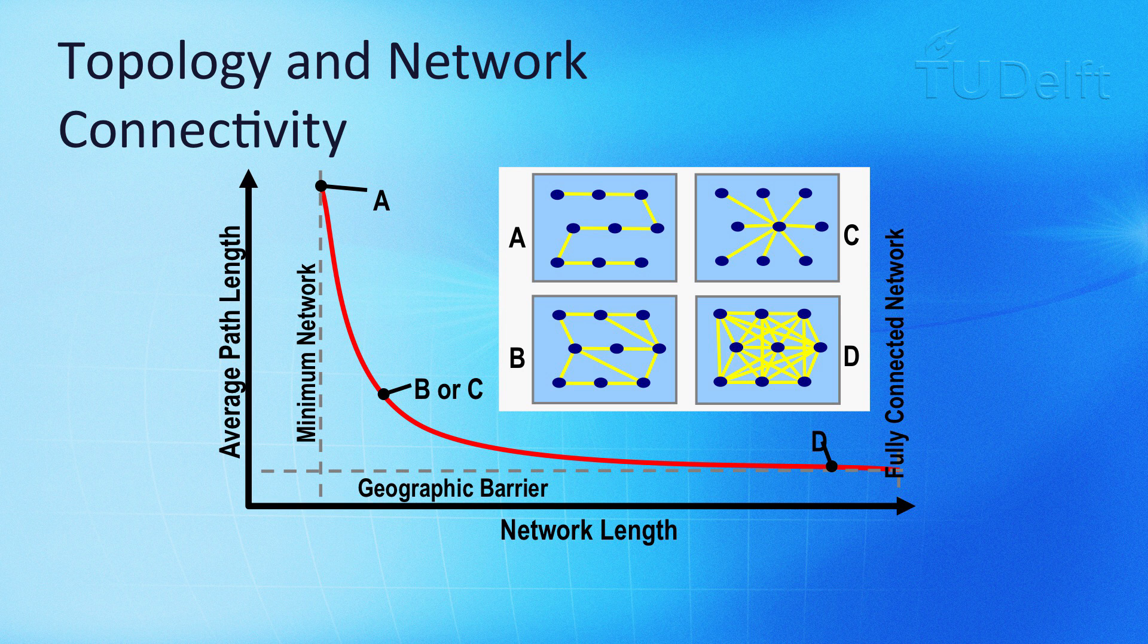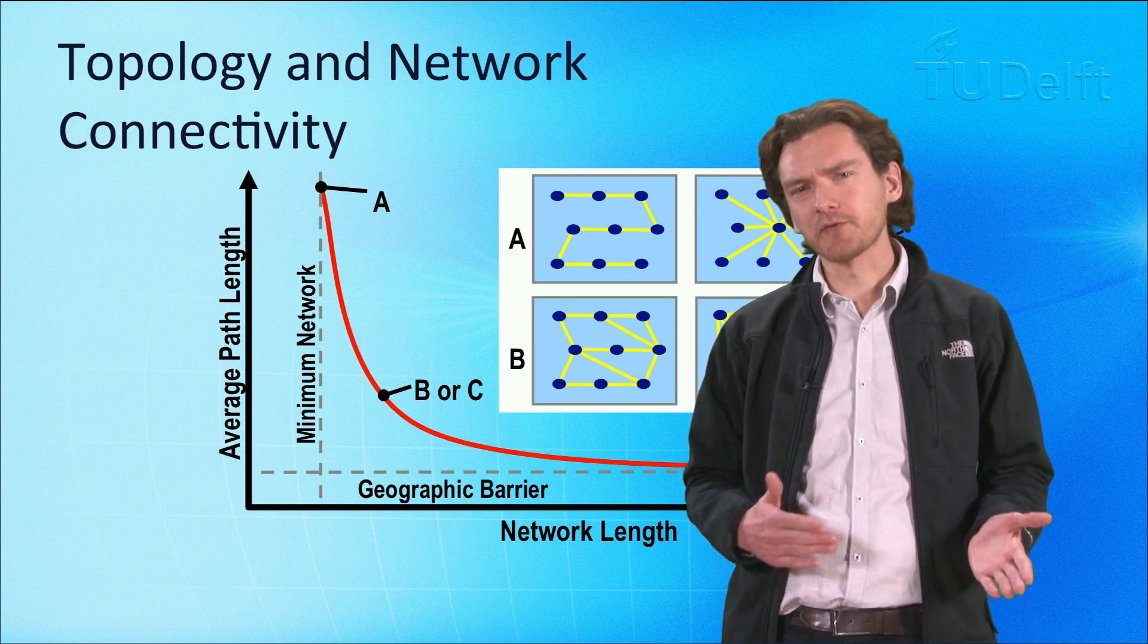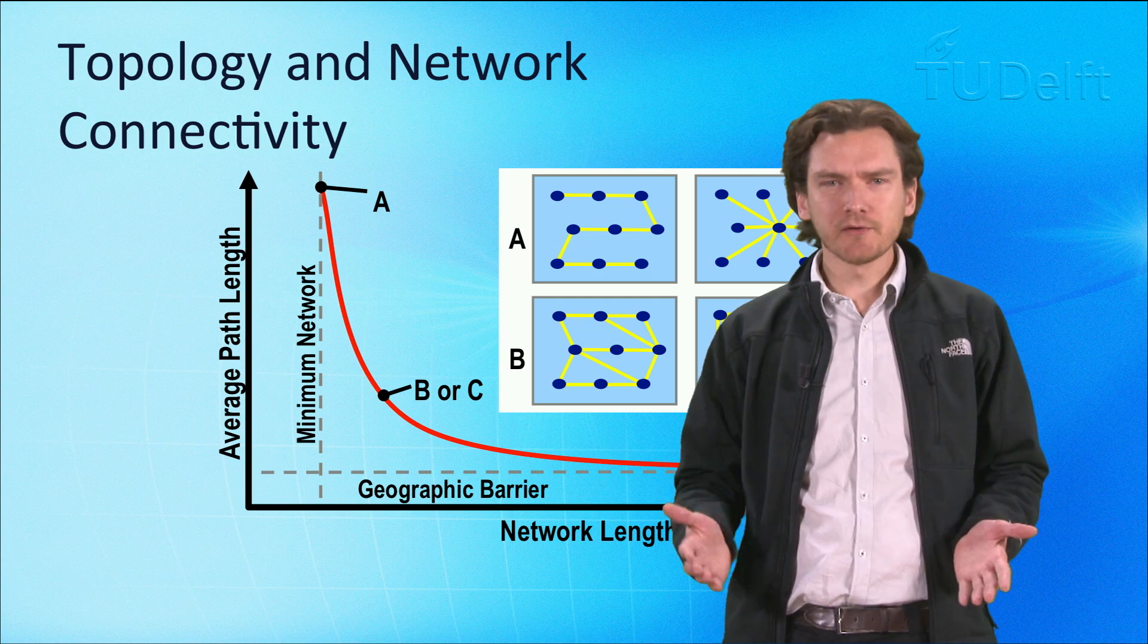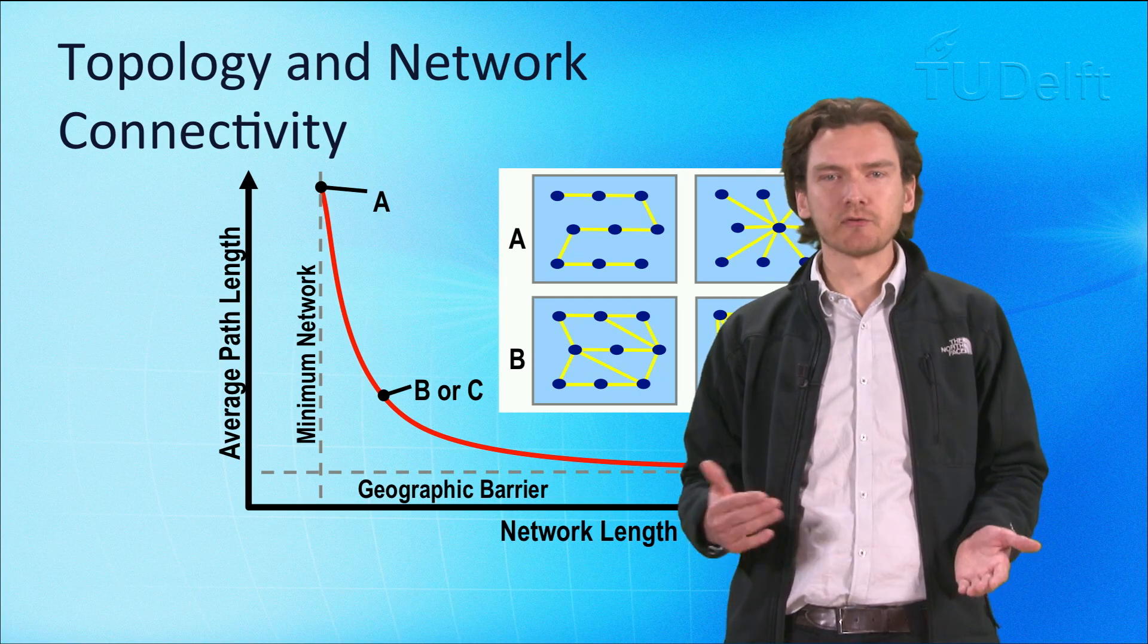It is interesting to note that you have diminishing marginal returns past a certain point. As you add more edges, you get smaller and smaller reduction in terms of the reduction in the average shortest path length. Basically at some point it's not really economical to keep on adding more edges beyond that point.